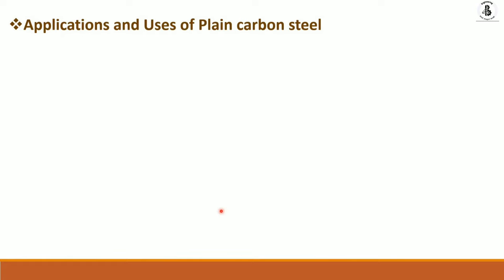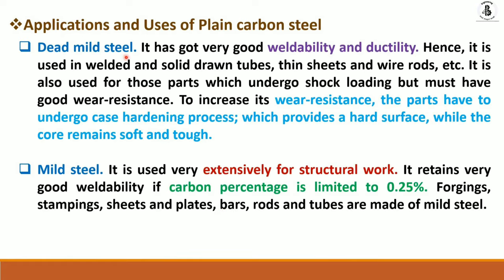Dead mild steel has very good weldability and ductility, so it can easily be deformed into any shape. It is used for welded and solid drawn tubes, thin sheets, wire, rod, and many more applications. It is also used for parts that undergo shock loading but must have good wear resistance. For such requirements, the parts undergo case hardening processes, which provide a hard surface while the core remains soft and tough, through surface engineering or heat treatment processes.